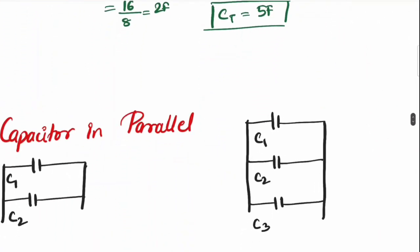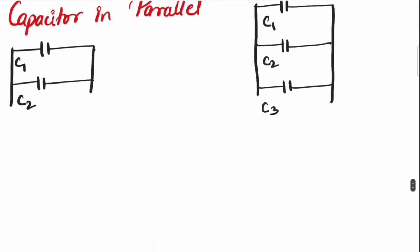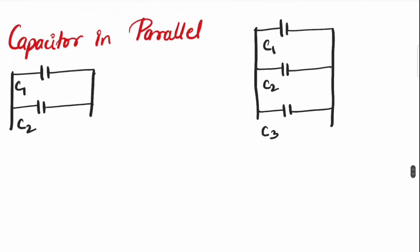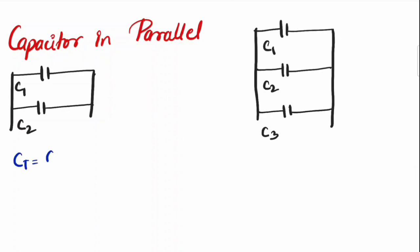So now this becomes very simple if we correlate capacitor in parallel. Capacitor in parallel is exactly same as resistance in series. So my CT will be C1 plus C2, that's it. So let's say I have 4 Farad and 10 Farad over here. So my CT will be 4 plus 10 equal to 14 Farad.